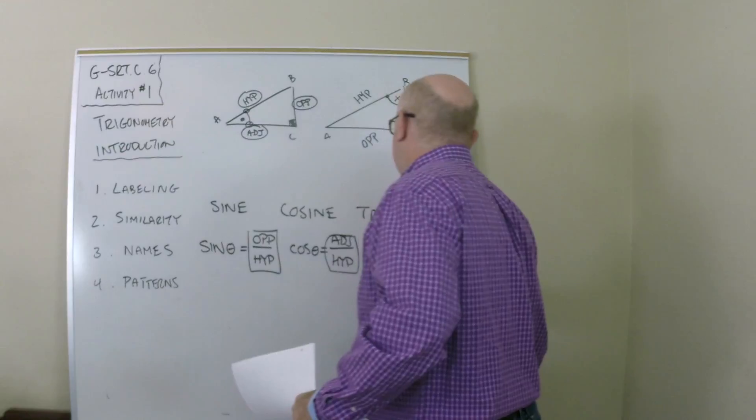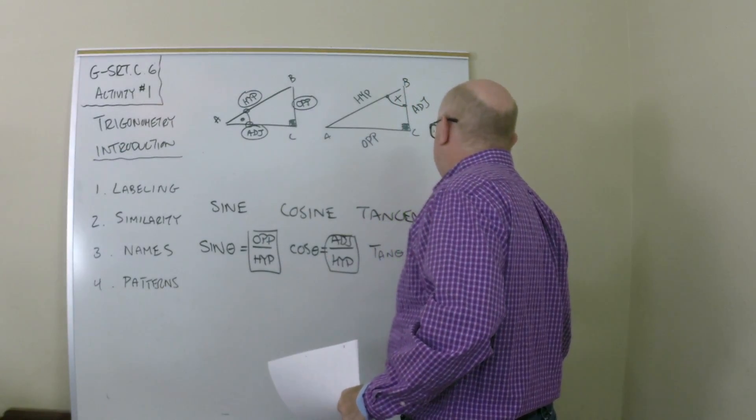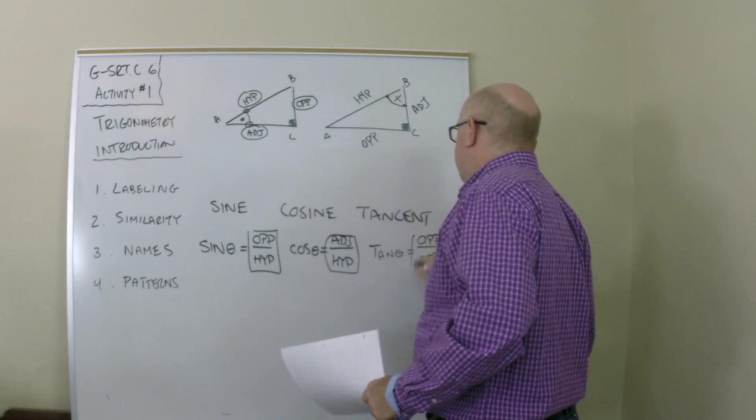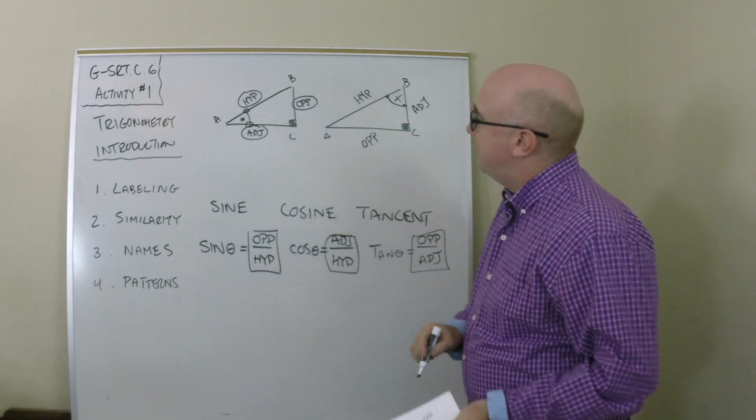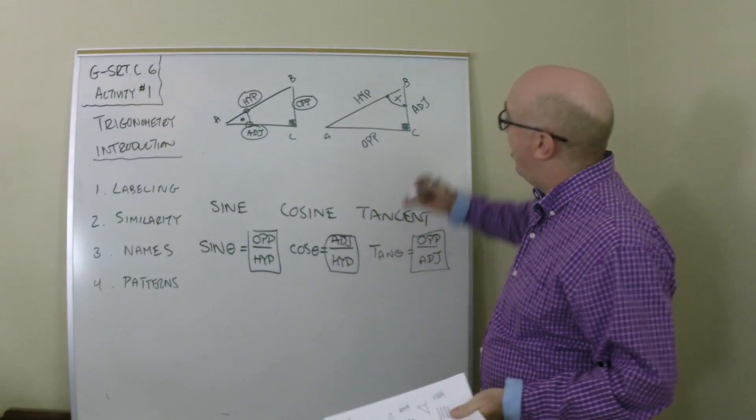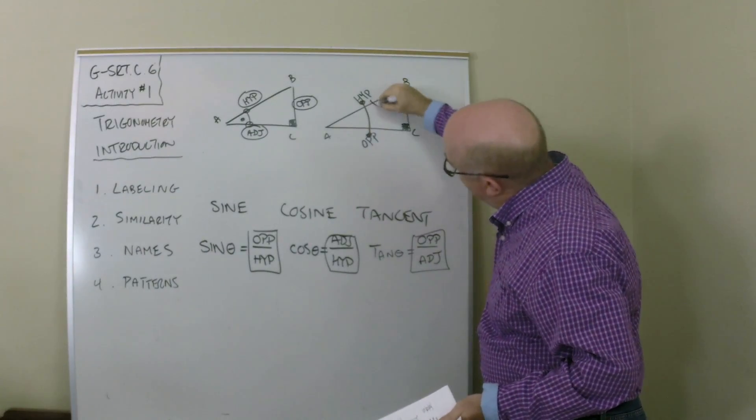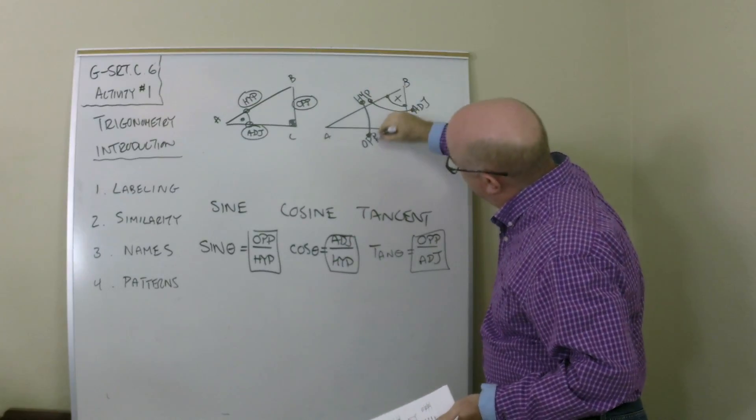Tangent then, therefore, is the other comparison of the opposite side to the adjacent side. Now ultimately what these three ratios are, are the three ways that you can connect these. You can compare each of those sides.